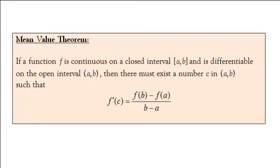The mean value theorem says if a function f is continuous on a closed interval from a to b and is differentiable on the open interval from a to b, then there must exist a number c in between a and b such that the slope at that point is equal to the slope over the whole entire interval.